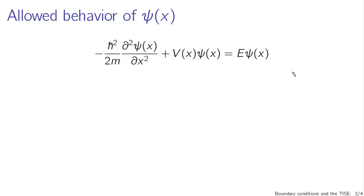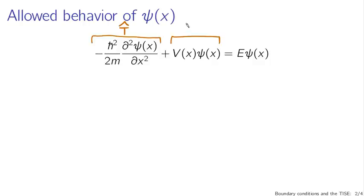The boundary conditions needed to match two solutions of the time-independent Schrödinger equation can be determined from consideration of the equation itself. What is the allowed behavior of a solution? Let's focus on the kinetic energy operator, since it contains the second derivative of psi — that's where we get a good notion of what's allowed and what's not allowed for psi.